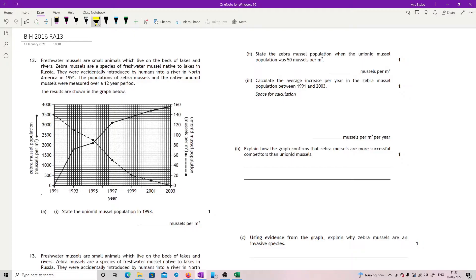This shouldn't be too bad. So we've got our standard double axis graph that you're expecting. I am looking for the unionid mussels, so I am reading to this side and I'm reading to the dotted line. So 1993 here, I've got to go up to this and then read across. Now it's between two points, but it's okay, it's bang in the middle.